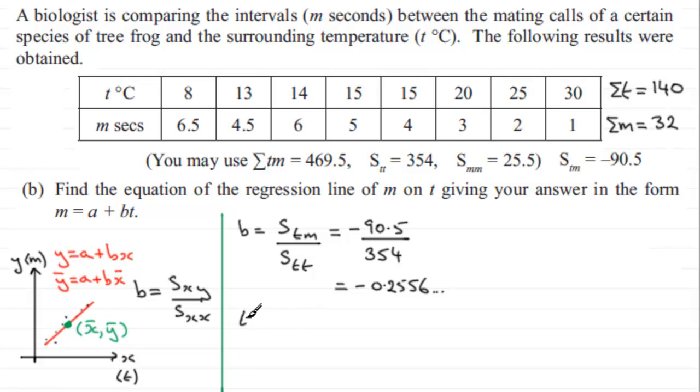So we need to work those values out. The mean of t, t̄, equals the sum of t, Σt, divided by the number of observations. We worked out earlier that Σt was 140, so we've got 140 divided by 8 observations, which equals 17.5. Similarly, the mean of m, m̄, is the sum of all the m values divided by n. We've seen that Σm is 32, so 32 divided by 8 observations equals 4.